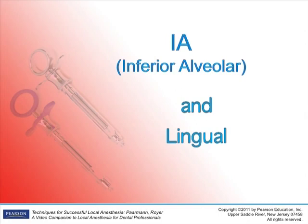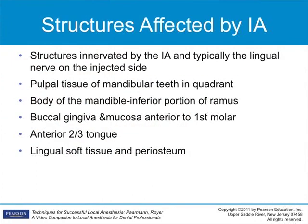The Inferior Alveolar and Lingual Injections. The Inferior Alveolar Injection anesthetizes the periodontal ligaments, pulpal and osseous tissues in the mandibular quadrant, buccal gingival tissues from the premolar through the midline in the quadrant, and the skin and mucous membrane of the lower lip.